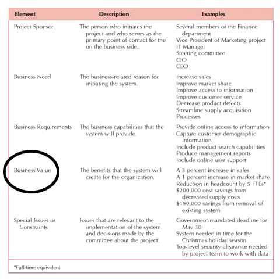The business value section is where we identify what kind of benefits it is going to give to the company. We're going to break these business values down into two different types: one is called tangible and the other is called intangible.